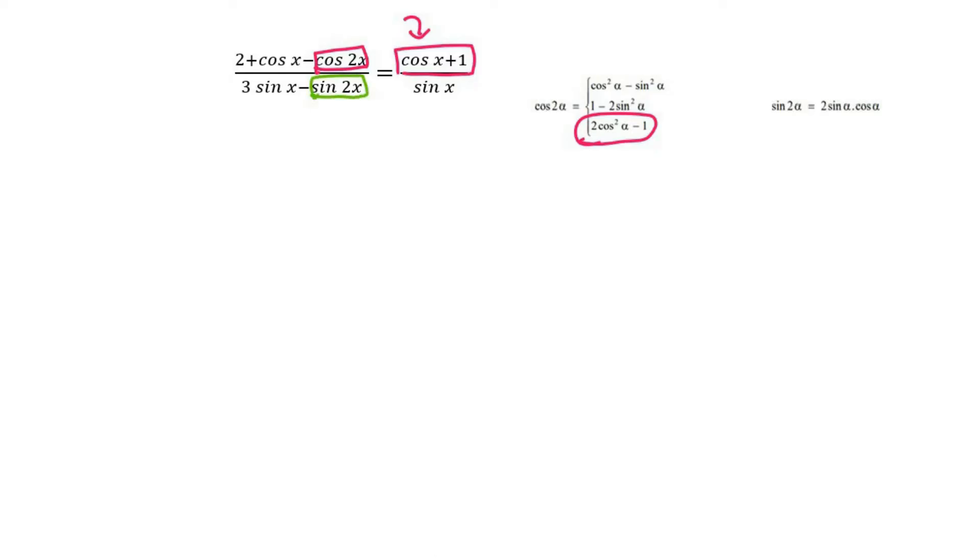Then if there is a sin2x, you would simply expand it using that. And we should let them know that we are going to be working on the left-hand side. So that's going to be 2 plus cosx minus, then in brackets - it's very important that you use brackets - 2 cos²x minus 1, because remember we're choosing this one. Then at the bottom, we're going to say 3 sinx.